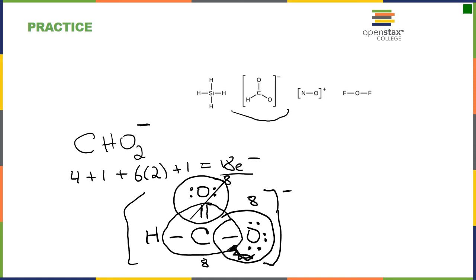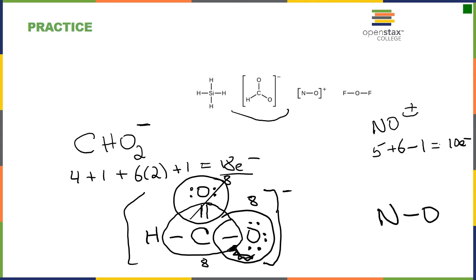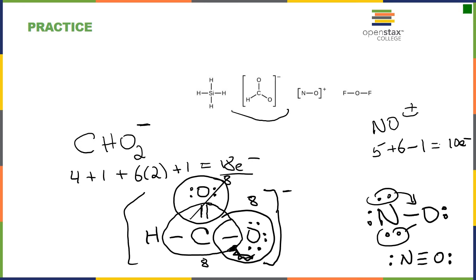For NO⁺, the plus charge means we've lost one electron. We have five from nitrogen plus six from oxygen minus one, giving ten electrons total. Starting with a single bond and adding lone pairs, we find that only a triple bond satisfies the octet rule for both atoms — two, four, six, eight, ten electrons. We place this in brackets with a positive charge.